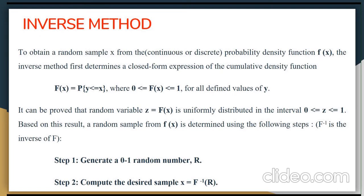To obtain a random sample x from a continuous or discrete probability density function f(x), the inverse method first determines a closed-form expression of the cumulative density function: F(x) = P(y ≤ x), where 0 ≤ F(x) ≤ 1 for all values of y. It can be proved that the random variable z = F(x) is uniformly distributed in the interval [0, 1]. Based on this result, a random sample from f(x) is determined using two steps: Step 1 — generate a random number r in [0, 1]; Step 2 — compute the desired sample x = F⁻¹(r), where F⁻¹ is the inverse of F.